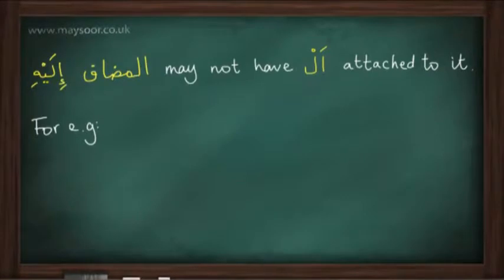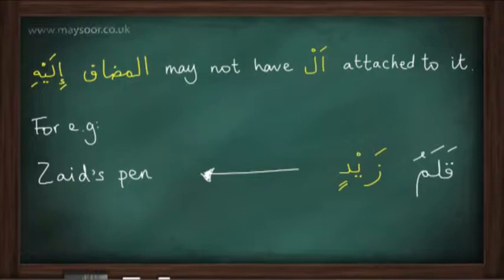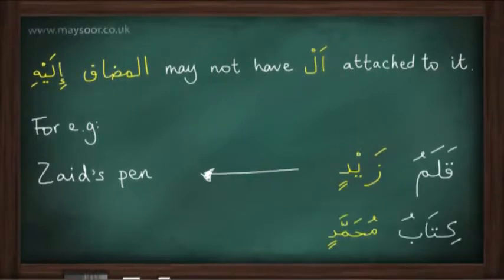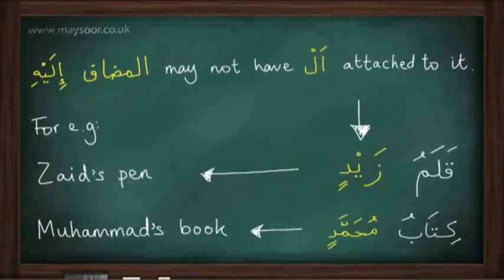However, al-mudaf ilayhi may not have 'al' attached to it. For example, we can say qalamun Zaydin, which means Zayd's pen, or kitabu Muhammadin, which means Muhammad's book. Al-mudaf ilayhi in these two examples ends in kasratayn — two kasras — and this is due to the absence of 'al' at the beginning of the word.